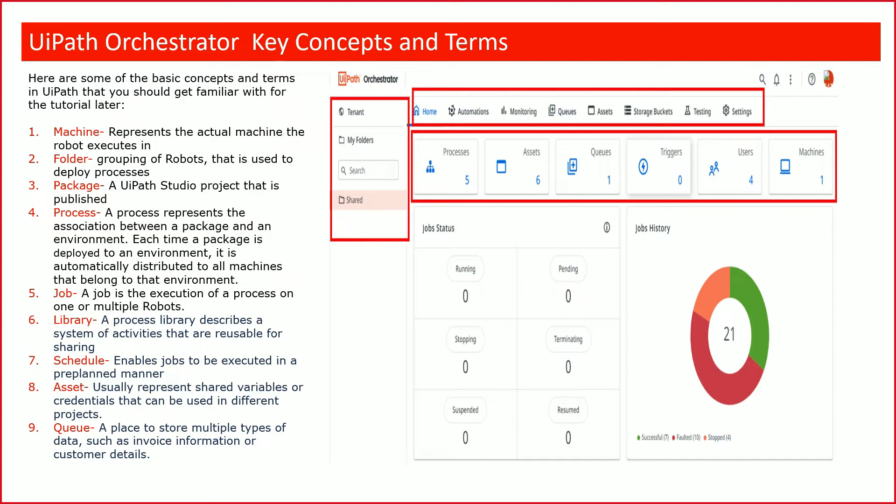When a process is running — either on one machine or multiple machines — it is known as a Job. A job can be triggered manually or it can be scheduled. We should be able to define a trigger which will create a job and run it. So a job is nothing but an instance of a process in execution.